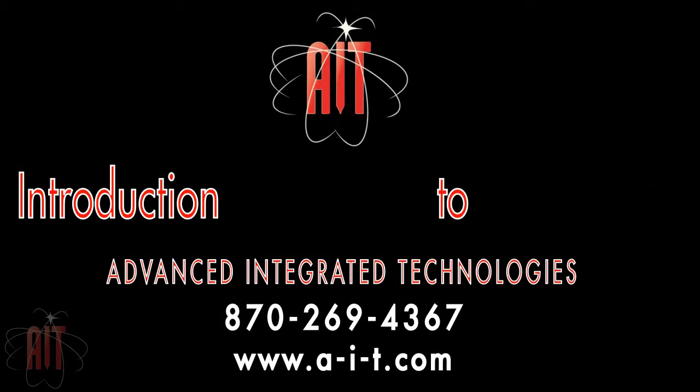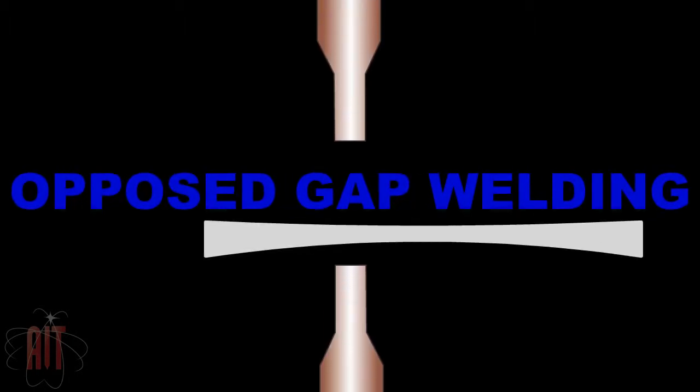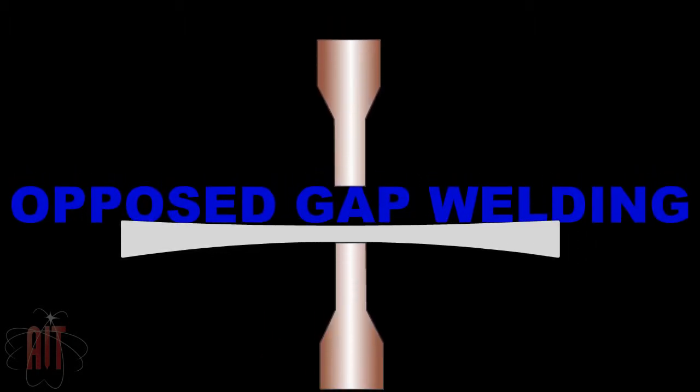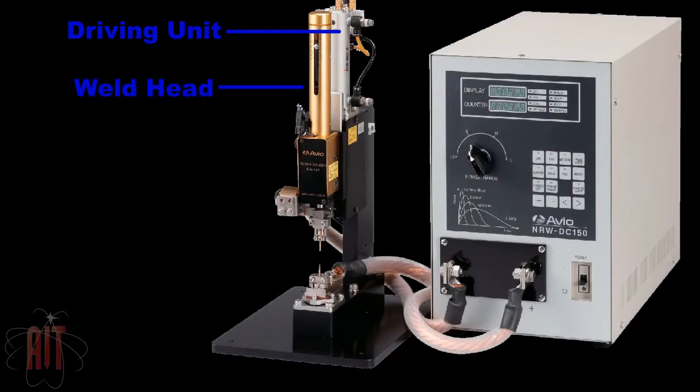Opposed gap welding is a spot welding technique where electrodes approach the workpiece from opposite directions. Here we see the components of a precision spot welding system.